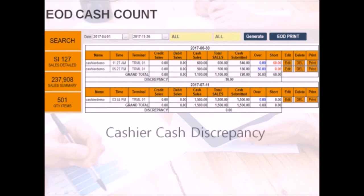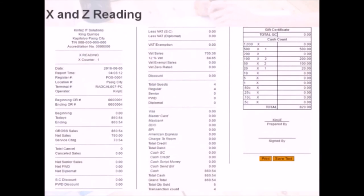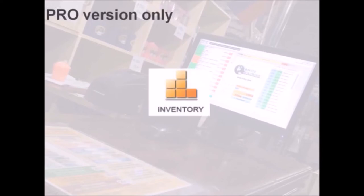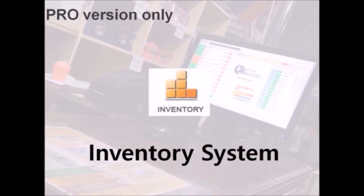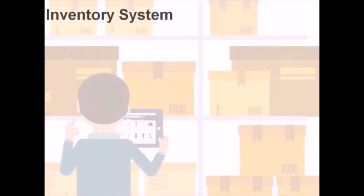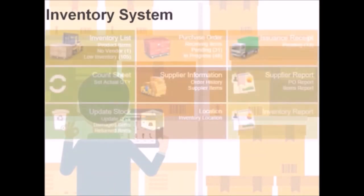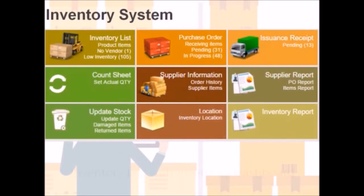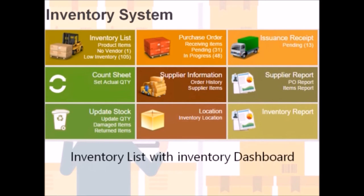Here's an example of a cash count with discrepancies. X and Z readings are both ready and available for print as you select the dates to cover. With the pro version, we have the full inventory module. Here's a closer look into the many features available.